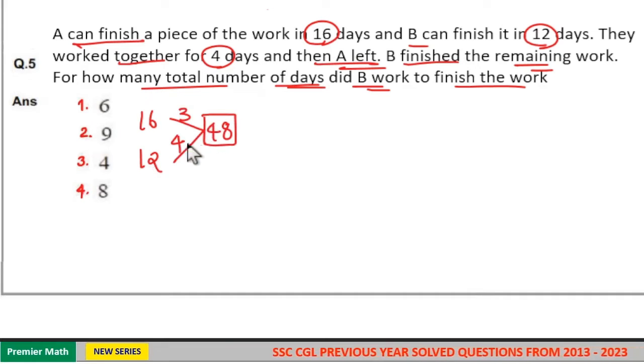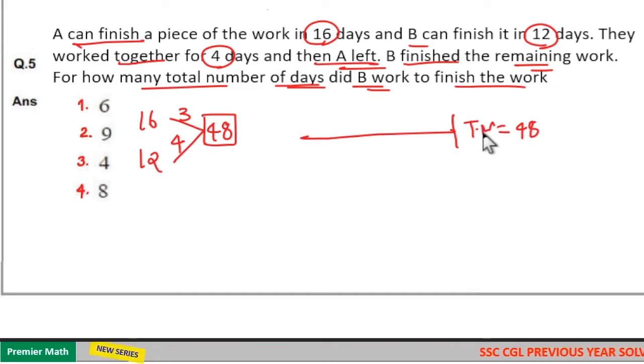Now total work is 48. A can finish 3 units of work in a day. B can finish 4 units of work in a day. Total work equals 48. In 4 days A and B together worked.